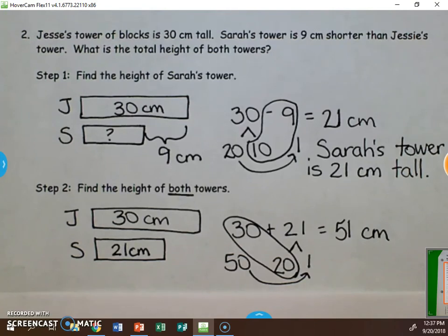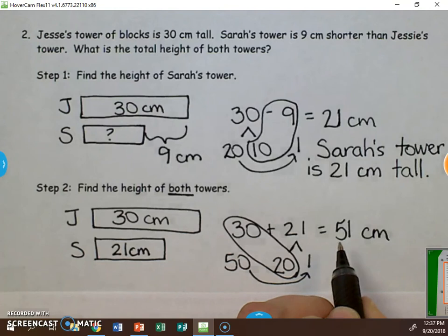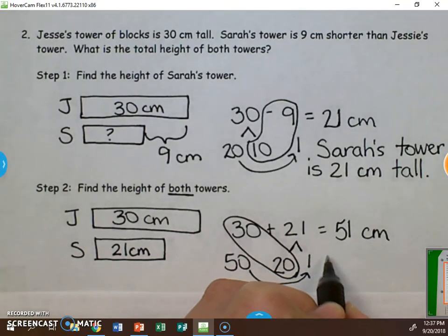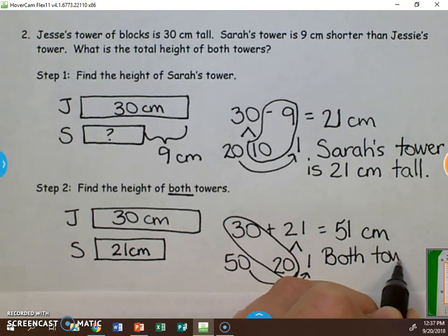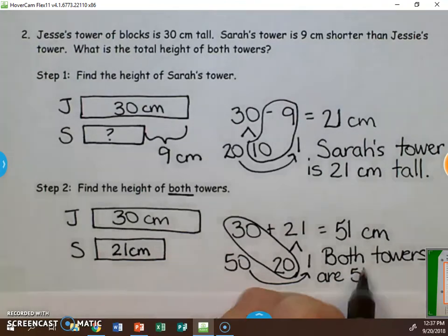So we now know that both towers are 51 centimeters in height. Once again, we need to write a sentence. So what are we talking about? Both towers, their height and 51 centimeters. Both towers are 51 centimeters together.